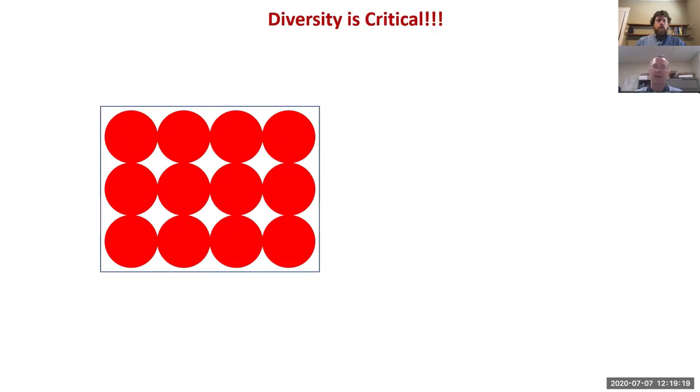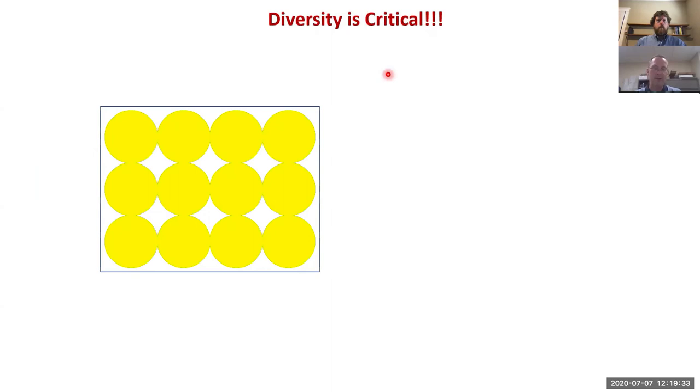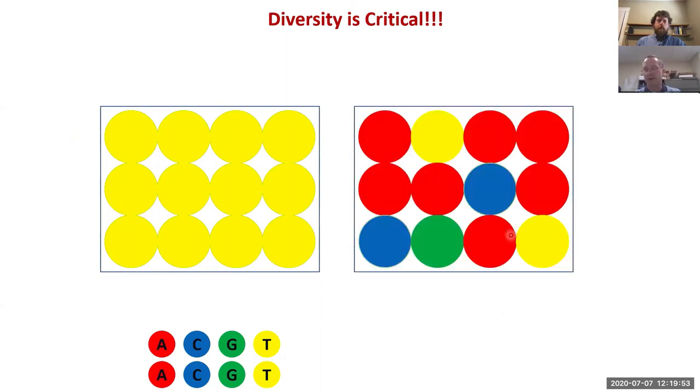Another important thing is that diversity of the library is critical. If your library is all the same then in the first cycle everything is, let's say A, and then everything is G, T and C and you end up with the sequence. That is actually a problem because the software uses the first two cycles to establish the matrix where the different clusters are, and if they're all the same then the software doesn't know where a cluster starts and where it ends.